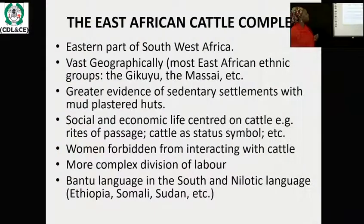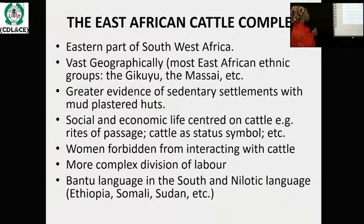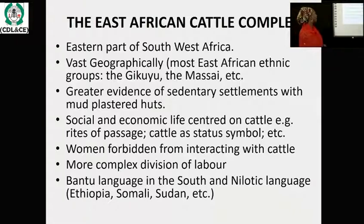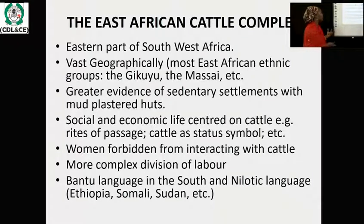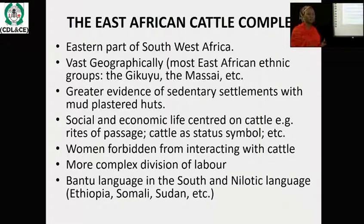The next is the East African Cattle Complex, the third group. They are found around the eastern part of southwest Africa, covering a vast geographical land. Examples of ethnic groups here include the Kikuyu and the Maasai, who we often hear about.